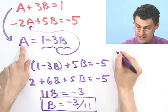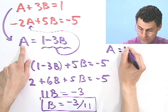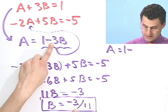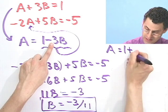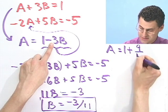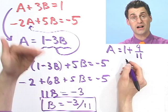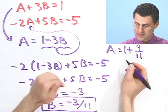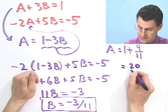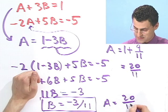What would a be? Well, I can go back to here and solve for a. A would equal 1 minus 3 times this. Well, a minus times a minus becomes a plus. 3 times 3 is 9 elevenths. 1 is 11 elevenths plus 9 elevenths. Looks like 20 elevenths. So A equals 20 elevenths.